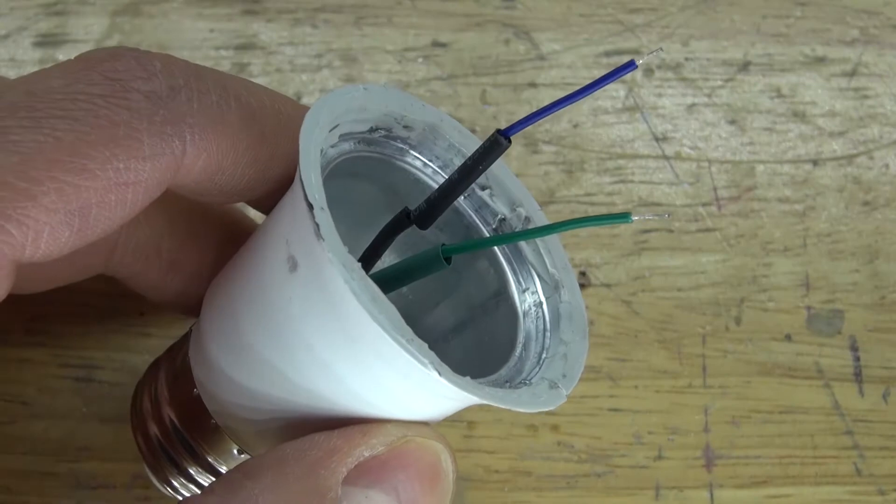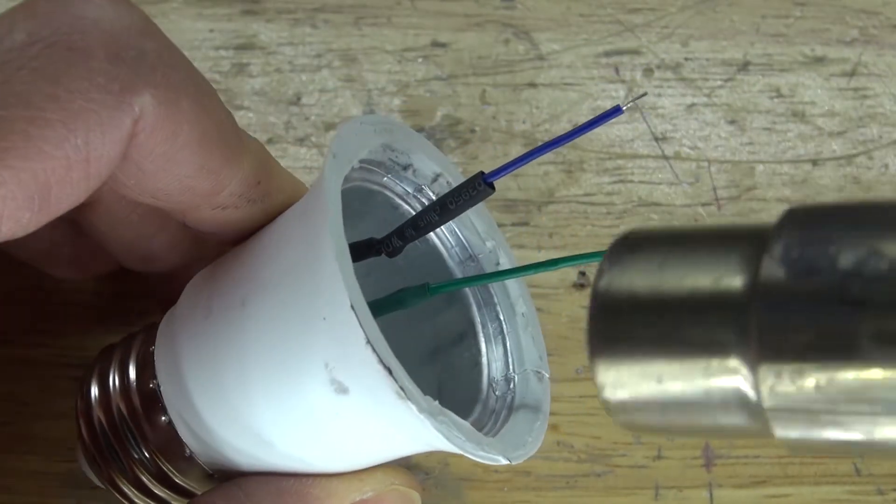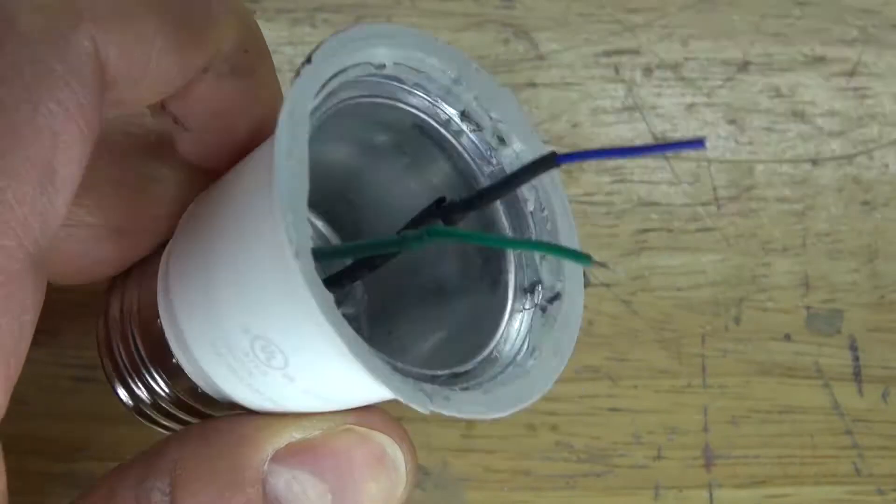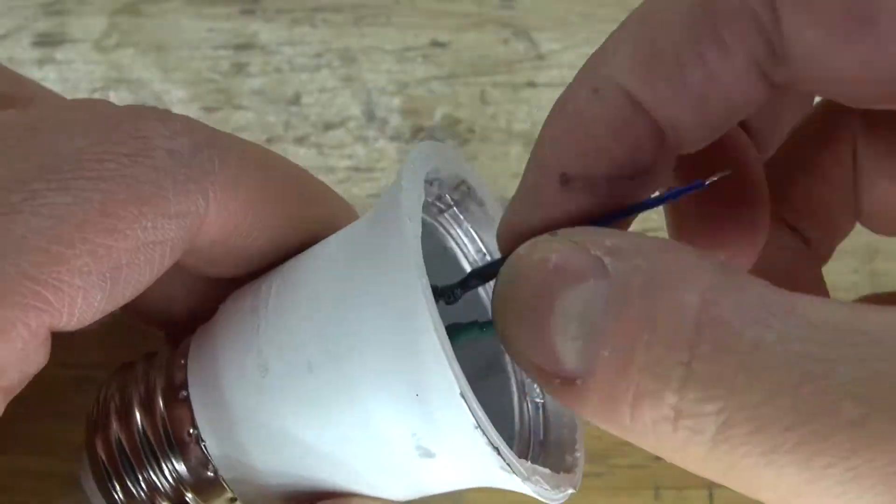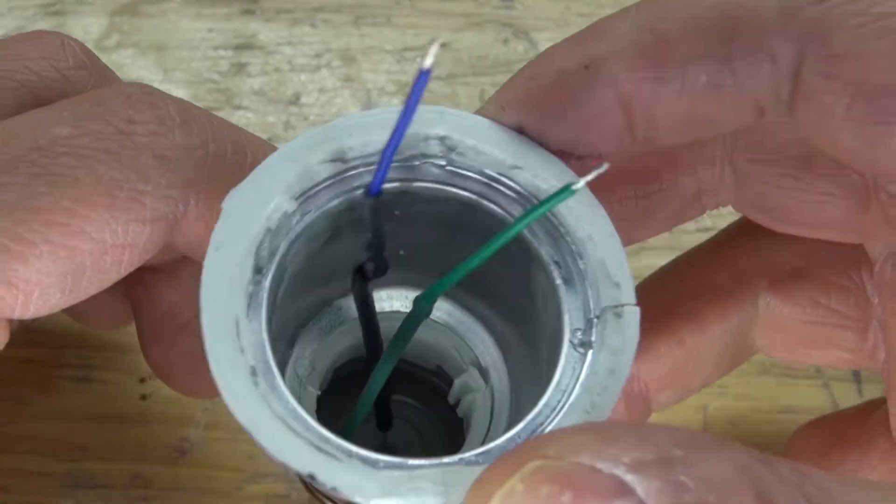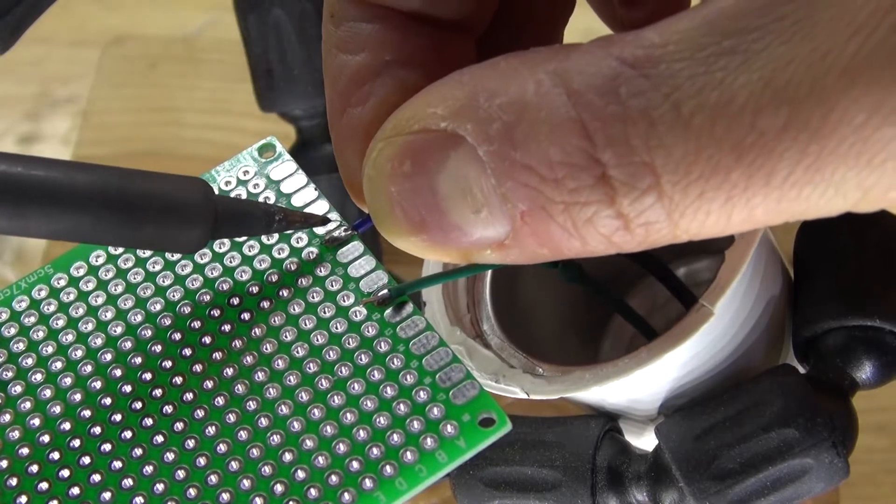And it should look just like this. Next take the hot air gun and shrink the tubing. And there, the wires are now insulated. Next, solder the wires to the perfboard.